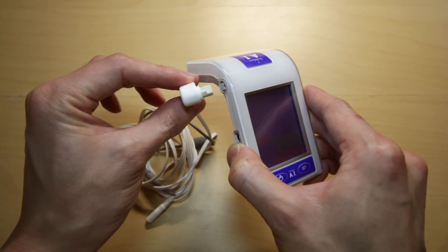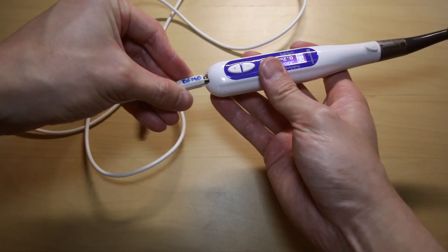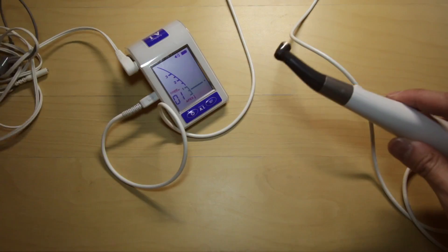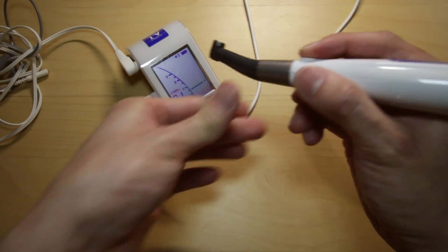This is how you set it up. You have a separate cord that you attach to the apex locator, and you also have a second cord that attaches from the handpiece to the apex locator. Now you're all set to get started.